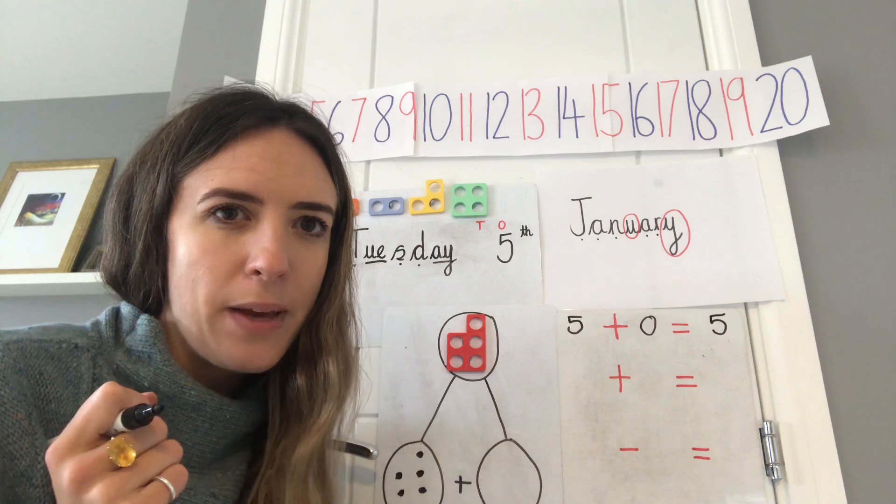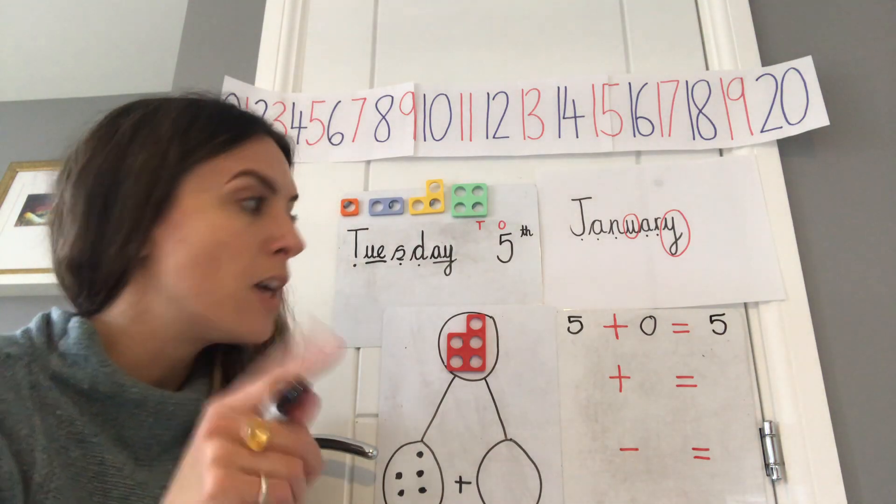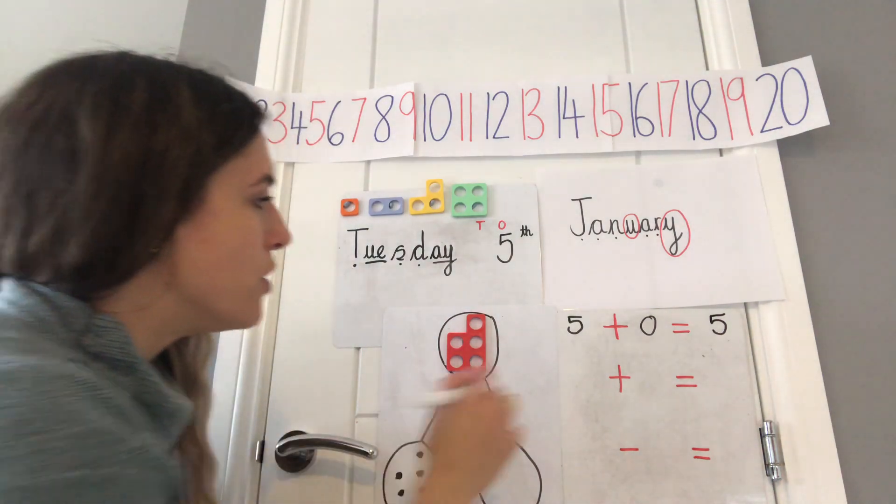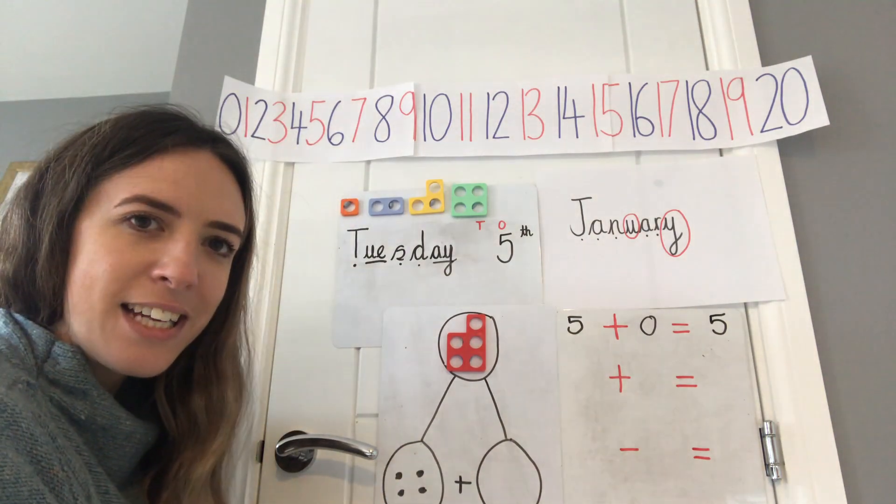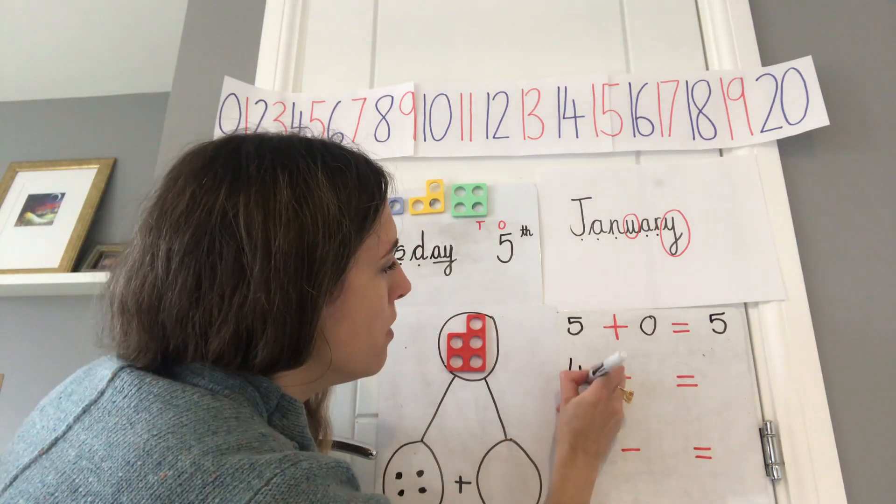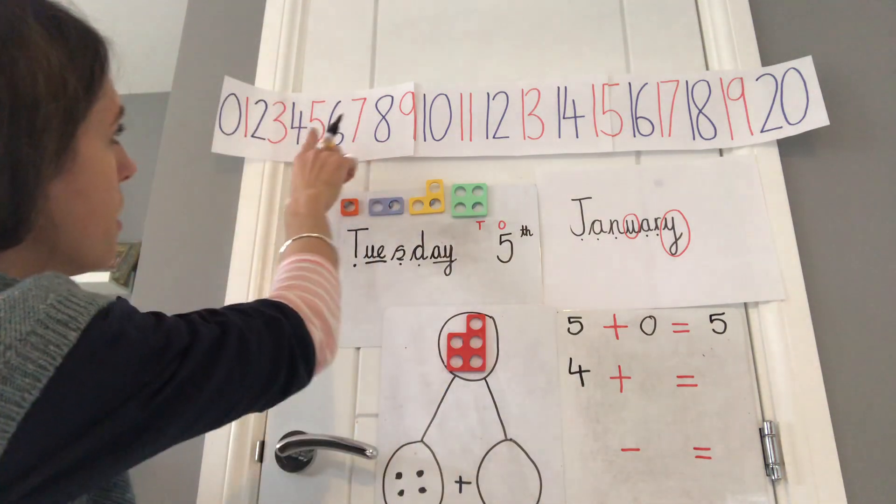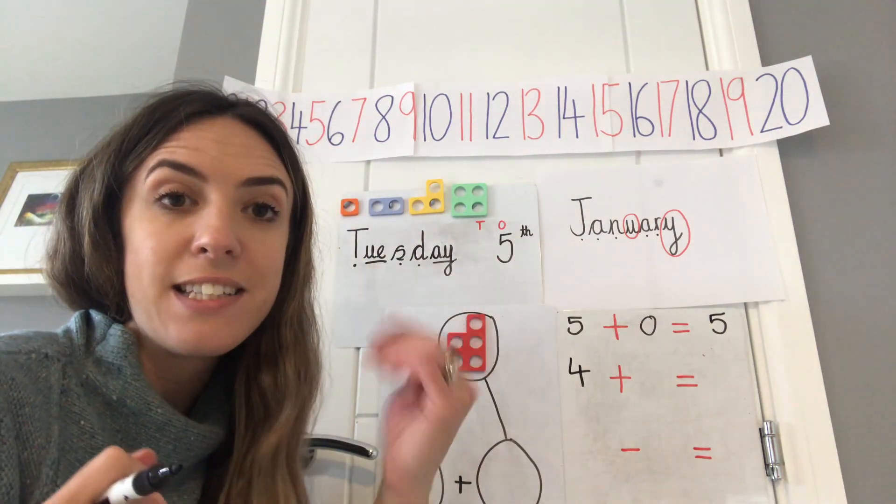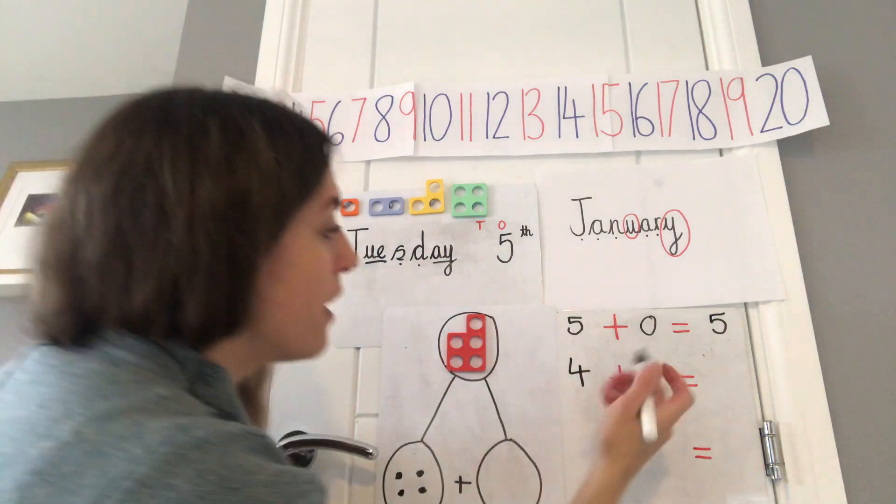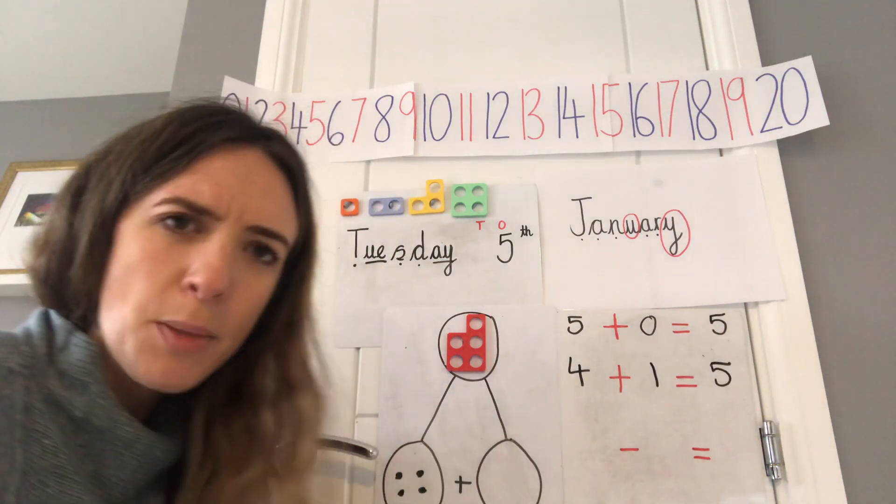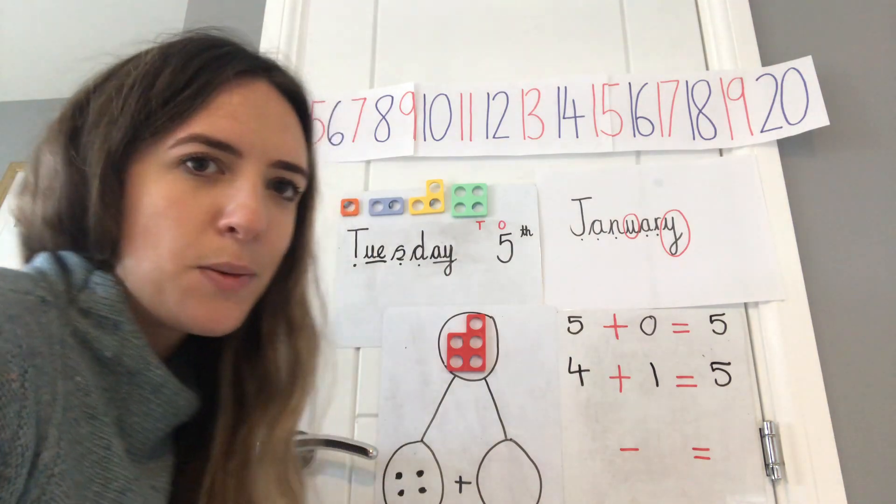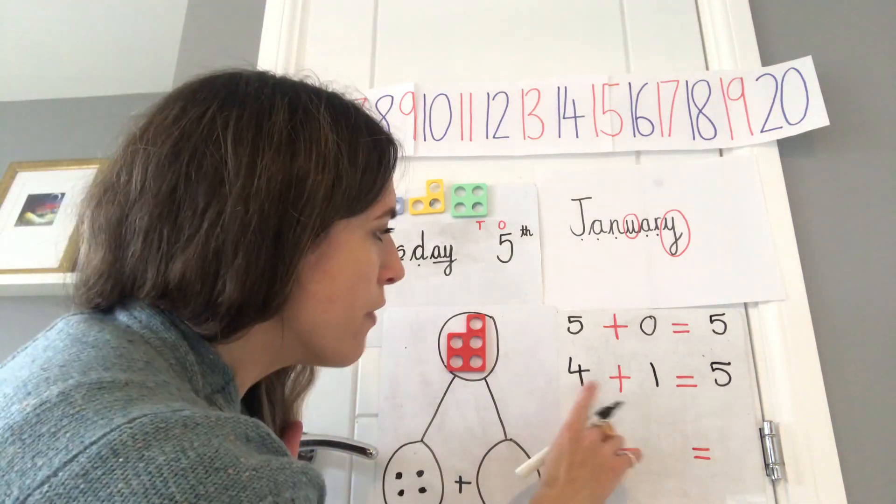Have another think. How else could we do it? We could do four add how many more to make five. Could use the number line to help you. Could use your fingers to help you. Four. How many more to make five? One equals five. Good. I know some of you will be really quick at doing this, which is super.